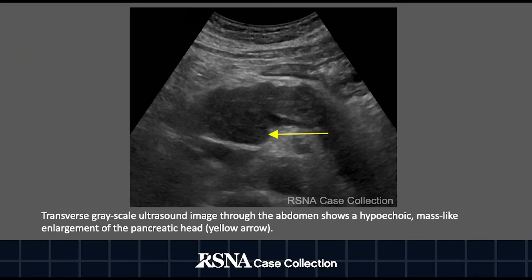Transverse grayscale ultrasound image through the abdomen shows a hypoechoic, mass-like enlargement of the pancreatic head, denoted by the yellow arrow.